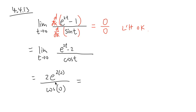So, e to the 0 power is 1. 2 times 1 is 2 on the top, over cosine of 0 is 1. Altogether, this limit is going to turn out to be 2. That's all.